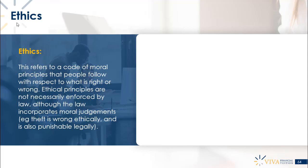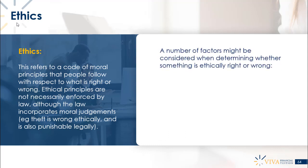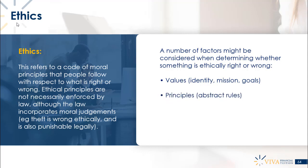A number of factors are worth considering when determining whether something is ethically right or wrong. First, values — the internal values of the organization, its identity, mission, and goals need to be factored in for any given action or activity. Then, principles — these are abstract, more general ethical rules that might be prevailing within society.